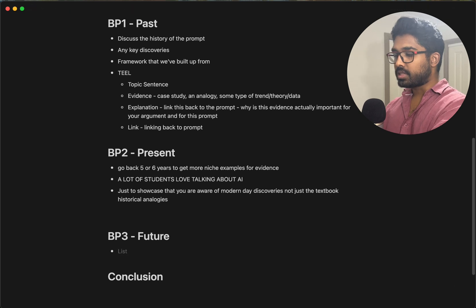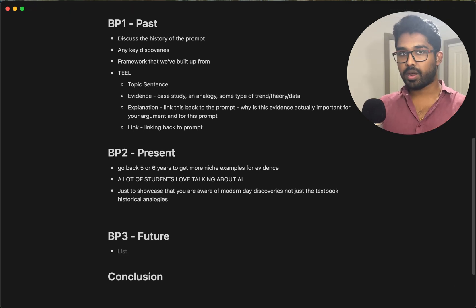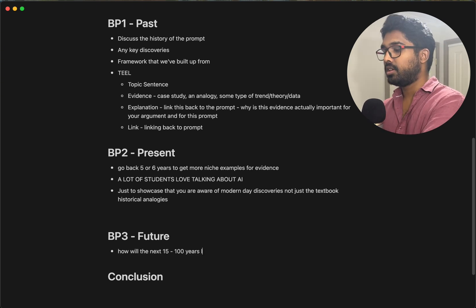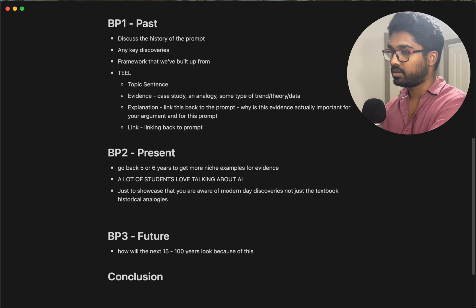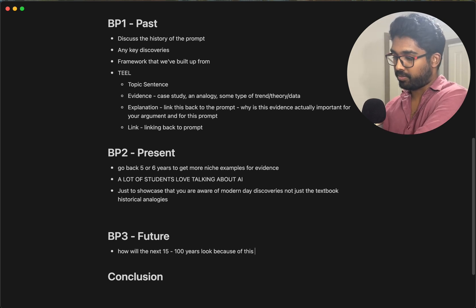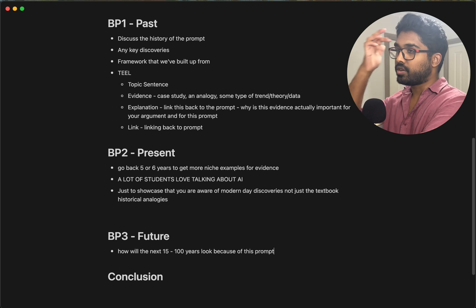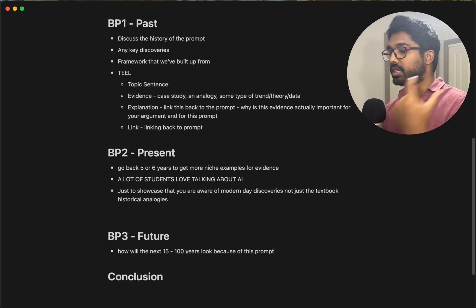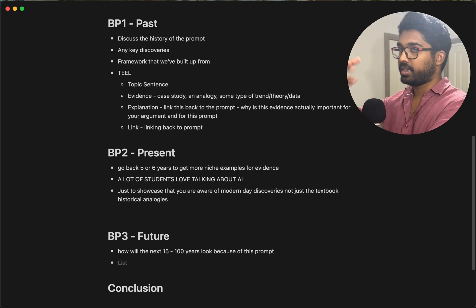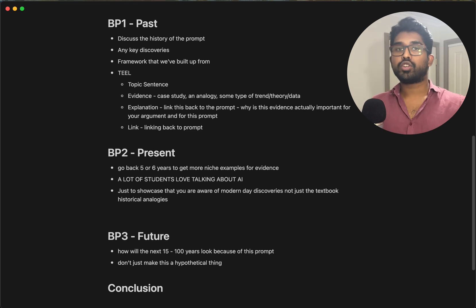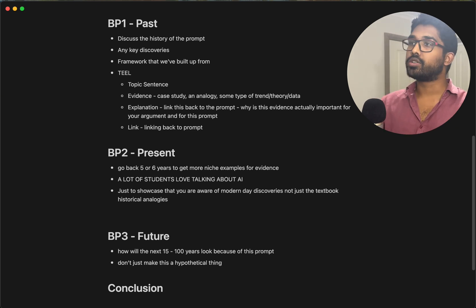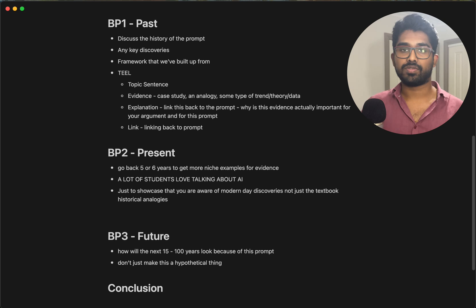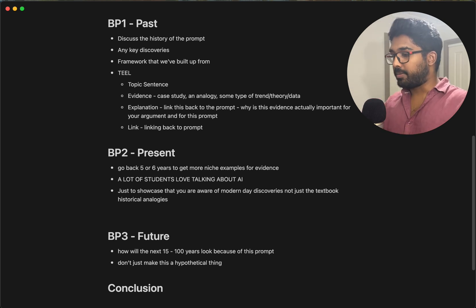The last one is future — this is my favorite paragraph to write because this paragraph is basically how will the next 15, 20, 30, or 100 years look because of this prompt. For example, if we put money into space exploration, what would the next 15 to 100 years look like? The key thing is not to just make this a hypothetical. Don't just say 'we could be on Mars in 100 years' or 'we could build a Dyson sphere around the sun.' Don't just make it pure conjecture.